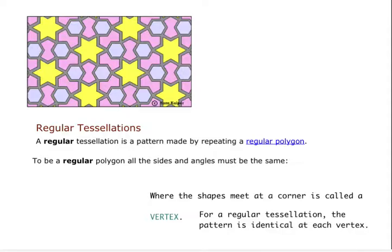Where a corner meets the shape is called a vertex. So right here would be a vertex, right here would be a vertex, right here is a vertex. Any place that a corner meets the regular polygon is a vertex.